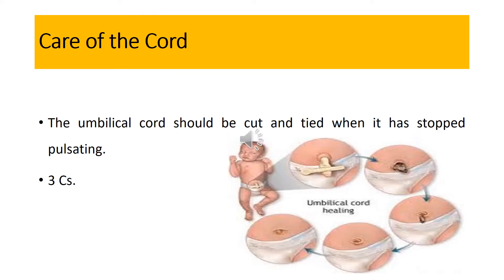Another important step in immediate neonatal care is clean cutting of the umbilical cord. The cord should be cut and tied when it has stopped pulsating. Cutting after pulsation stops allows the baby to receive an extra 10 ml of blood, which helps prevent anemia. Three C's are kept in mind while cutting the cord — this is also asked in viva exams. The three C's are: clean hands, clean surface, and clean instruments.